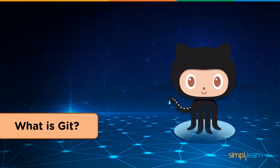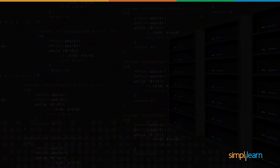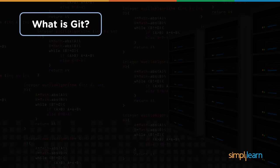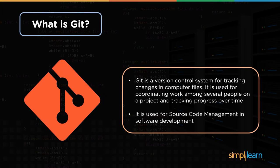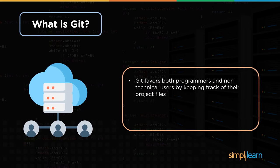Moving forth, let's see what is Git. Git is the most commonly used version control system that helps in tracking changes made to files. Hence we may have a record of all the changes that have been made to a file, and we can also revert back to a specific version. Git simplifies the process of software development with the help of easy source code management.